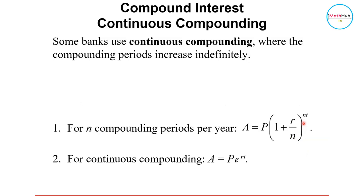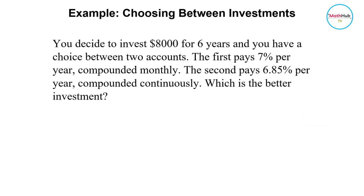Example: You decide to invest $8,000 for 6 years and you have a choice between two accounts. The first pays 7% per year compounded monthly, while the second is 6.85% per year compounded continuously. Which is the better investment? You can't just say, oh, I'll go for the first because 7% is bigger than 6.85%. To have a proper comparison, we'll have to compute.